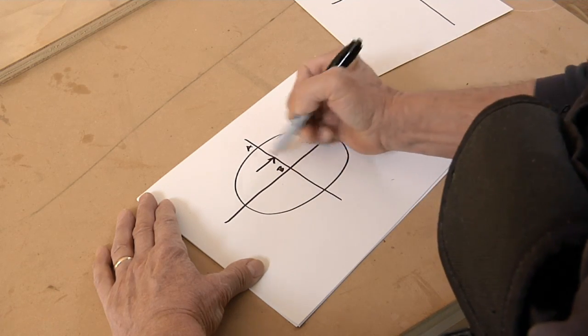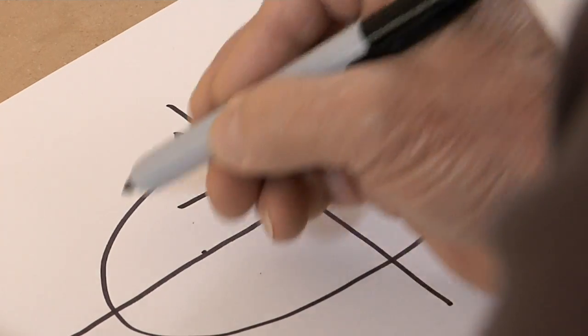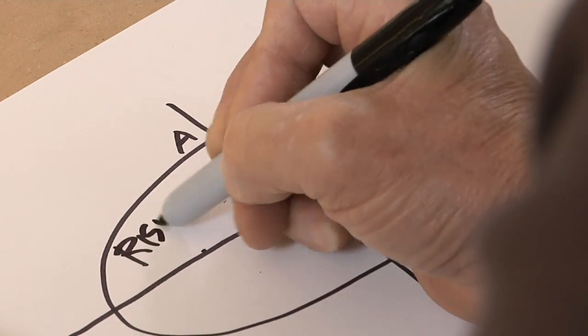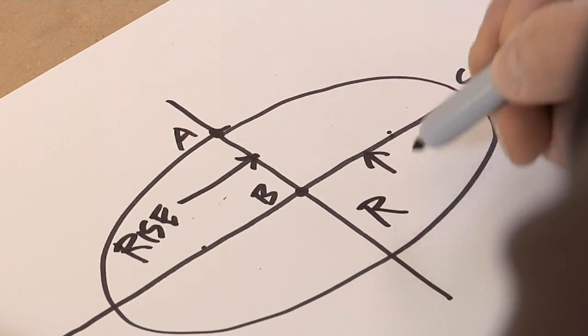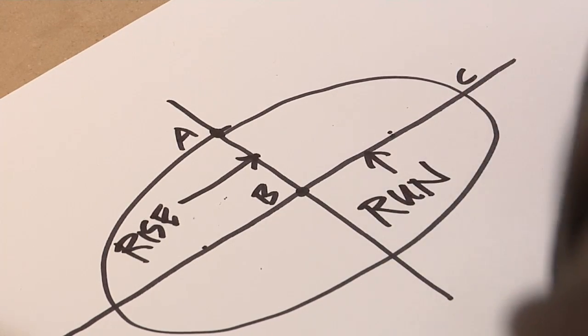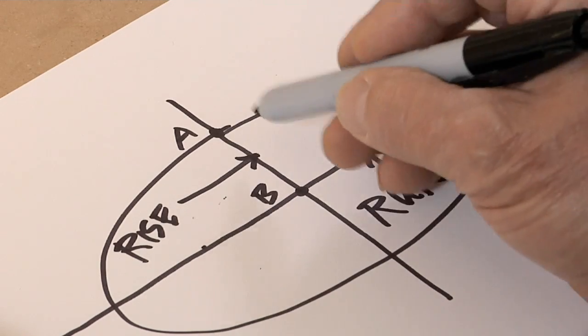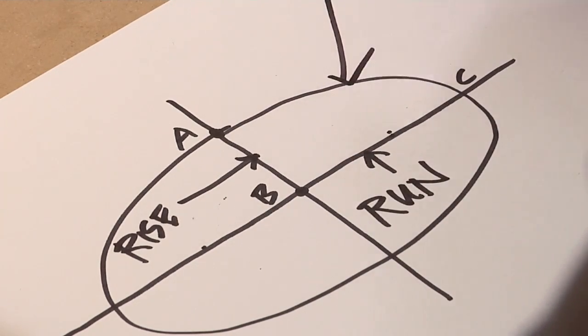We need to know this distance A-B. We're going to call this the rise, and we're going to call this the run. Now what we're going to do is transfer these two distances to a trammel, and then you'll see how we're going to draw this line.